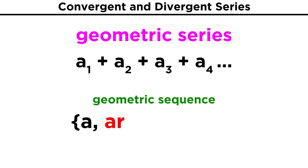So, starting with a, we get ar, then arr, or a r squared, then a r cubed, and so forth.